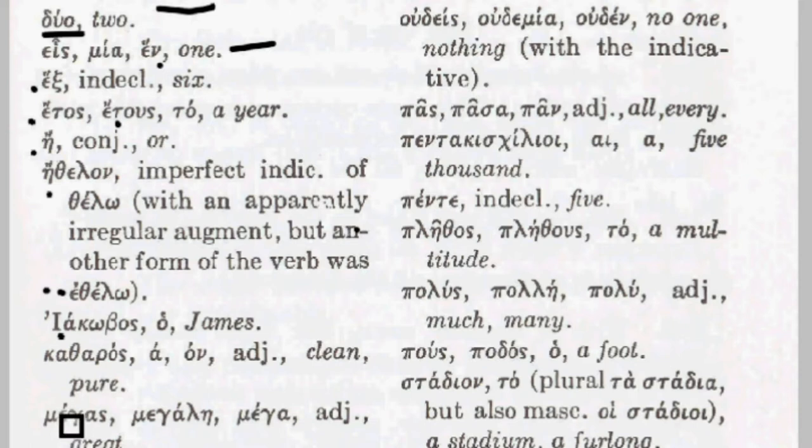Ēthelon is the imperfect indicative of thelō. It might appear that the augment is a little unexpected — we would have expected ethelō — but as Machen notes, another form of that verb was ethelō, and in the imperfect we always use that form, so the epsilon is actually lengthened in the augment to eta, giving us ēthelon. It's a word we've already had; we're simply getting a new form of it. Iakōbos is the word for James — also Jacob — same name in Greek.